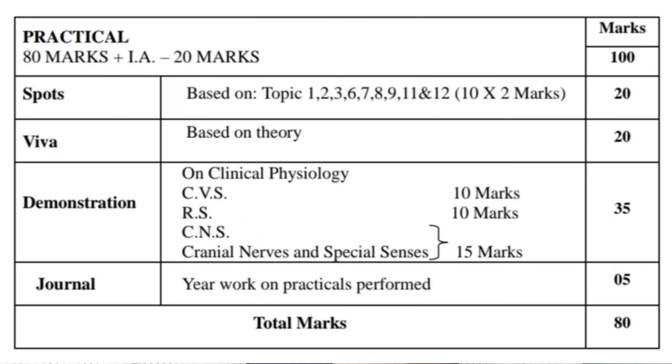Now, talking about Human Physiology. In Human Physiology, we do spotting, viva, demonstration, and journals. In spotting, different graphs, instruments, and equipment are placed on the table with questions on the side. You have to read the questions and write one to two lines in response. I have made a PDF with many spotting questions and will give you a link in the description box.